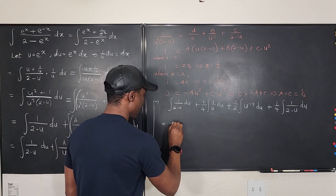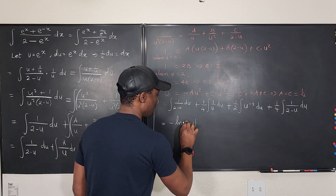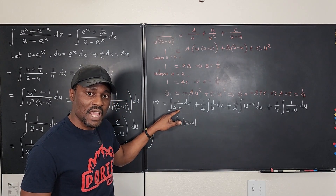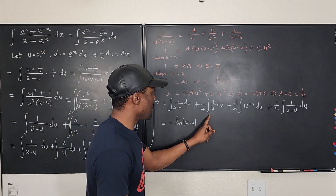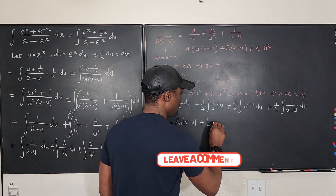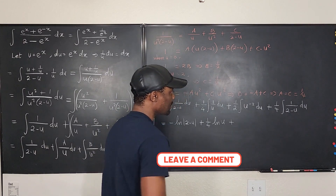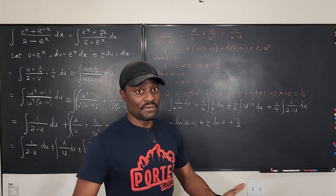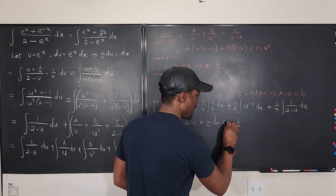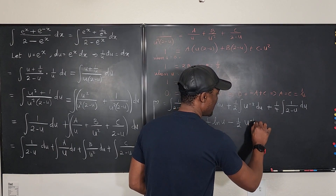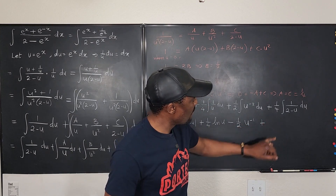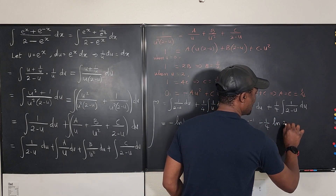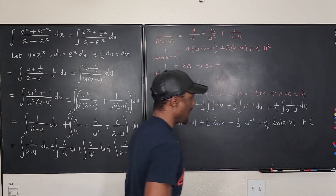Integrating each term: the first gives negative natural log of (2 minus u). Then plus 1/4 times natural log of u. The u to the negative 2 term gives 1/2 times u to the negative 1 divided by negative 1, which is negative 1/2 times u to the negative 1. And the last term gives negative 1/4 times natural log of (2 minus u). Plus constant c.